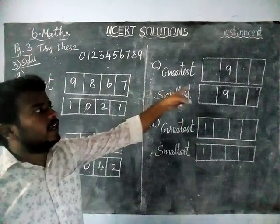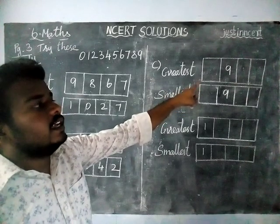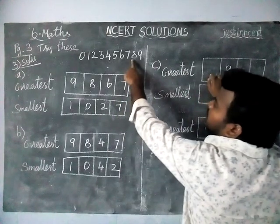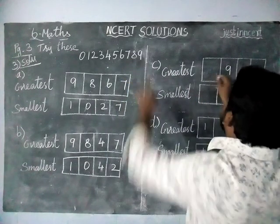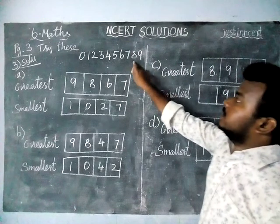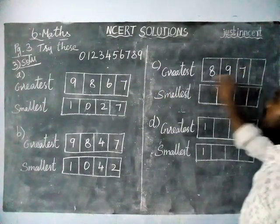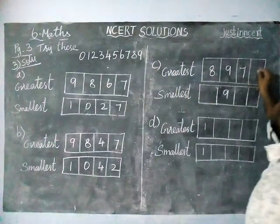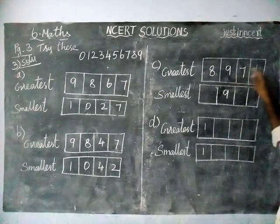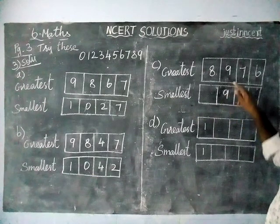Next, option C. In option C they have given that number 9 is in the hundreds place. So the next greatest number is 8. Then 9 is already given. Next greatest number is 7, and next greatest number is 6. So the greatest number is 8,976.